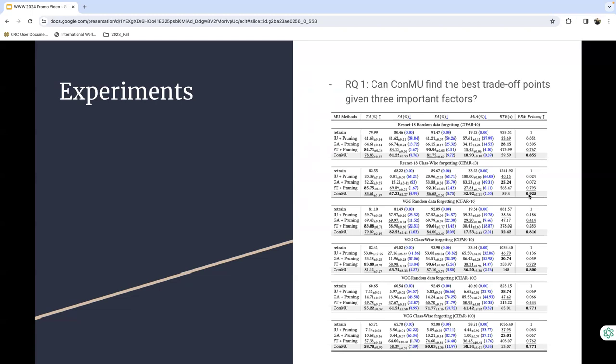Here, we present our first research question. In this table, we can see that CONMU has the highest FRM score among all baseline models with an acceptable runtime efficiency relative to other baselines.